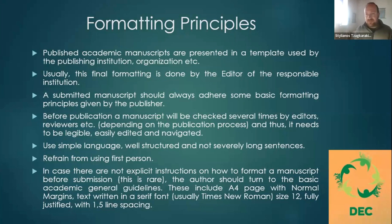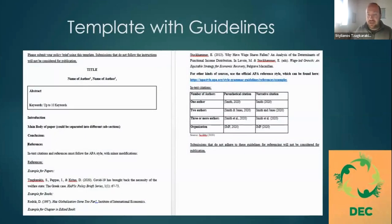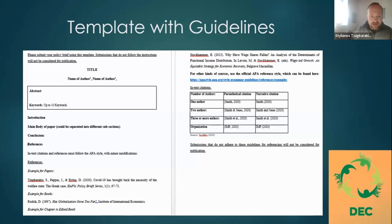In most platforms and journals you will have specific directions, guidelines, and templates. If not, they normally use A4 pages with normal margins, Times New Roman size 12, fully justified, and one-and-a-half line spacing — but you should check the guidelines to confirm the required format. You should create your policy brief according to the journal's template, whether one is provided or not.